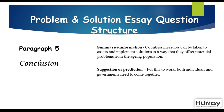Now we come to the final paragraph — the fifth paragraph — which is the conclusion. We need to summarize the information: 'Countless measures can be taken to assess and implement solutions in a way that they offset potential problems from the aging population.' The last suggestion or prediction could be: 'For this to work, both individuals and governments need to come together.' Please note that you should not write these subheadings in the essay; this is just for our understanding of the structure.